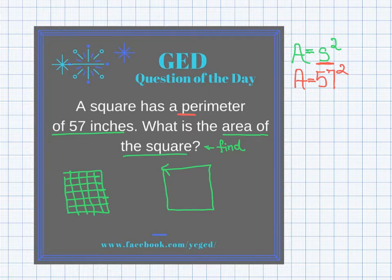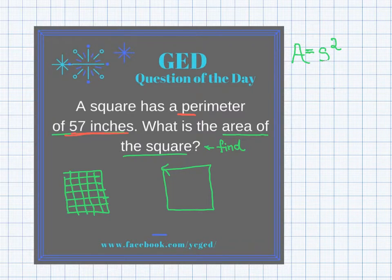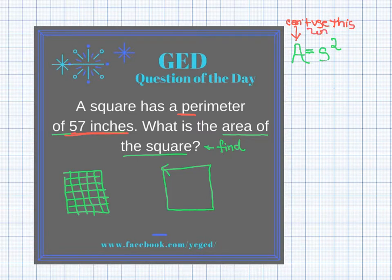What do we know? We know the perimeter is 57 inches. Don't panic — we have a great tool at our disposal: the perimeter formula. I can't use the area formula until I know s, the side length. So what I'm going to do is use the perimeter formula of a square.